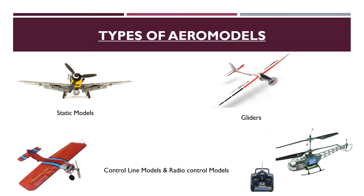Control line models — control line is a simple and light way of controlling a flying model aircraft. The aircraft is connected to an operator by a pair of lines attached to a handle that works the elevator of the model, allowing the model to be controlled in a pitched axis. Radio-controlled models — a radio-controlled aircraft is a small flying machine controlled remotely by an operator on the ground using a hand-held radio transmitter.